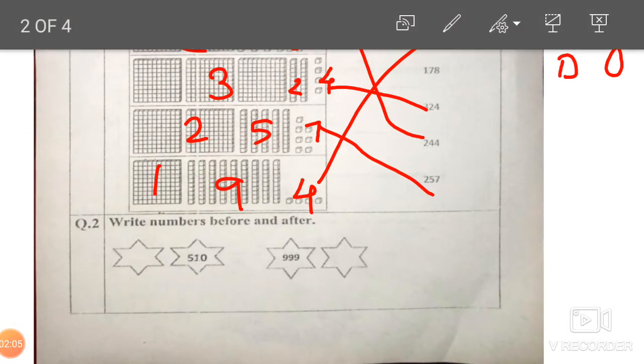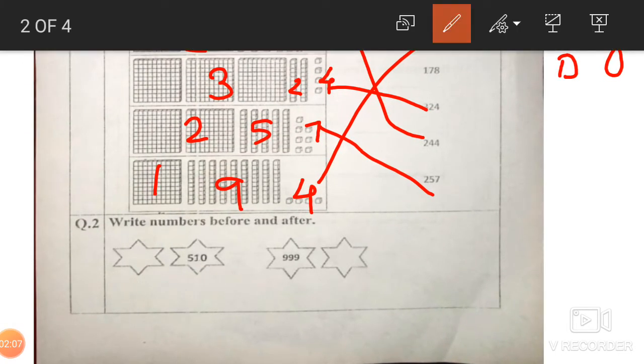This is also very simple. Before and after, beta. This is 510. So 510 ke pehle kya aayega. Yeh 5 ko waise ke waise likhna. This 5 you write as it is. Okay. And before 10 what comes? 9. Toh 9 likhe. Now it's a 3 digit number. So bich mein aap ke zero aayegi. So 509, 510. That is all you have to do.